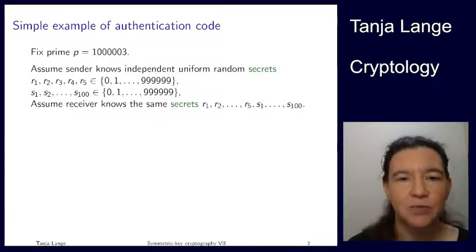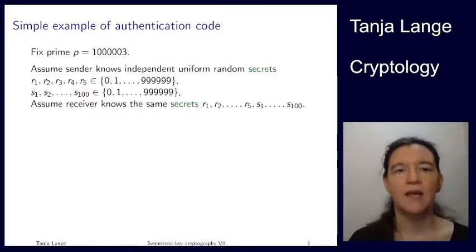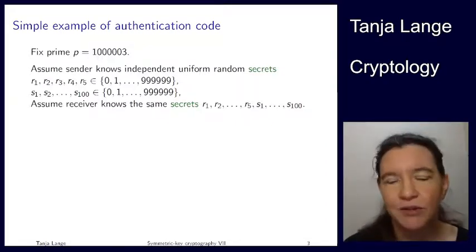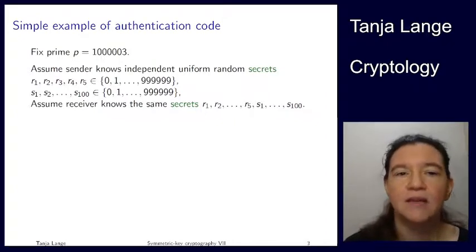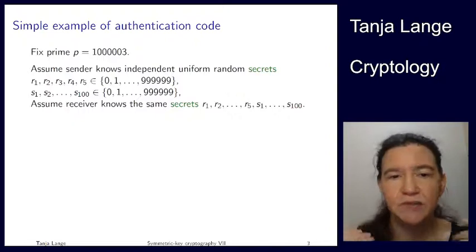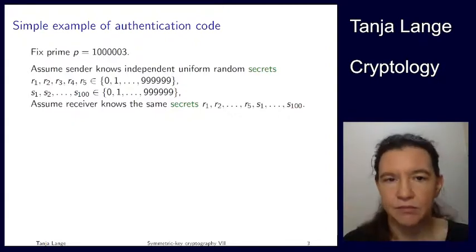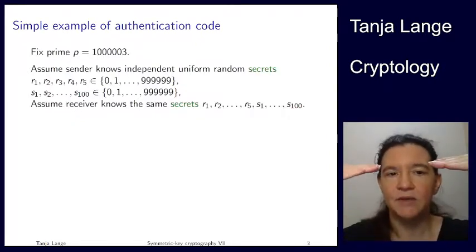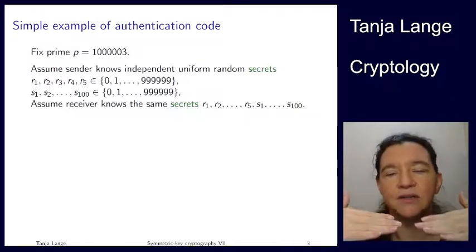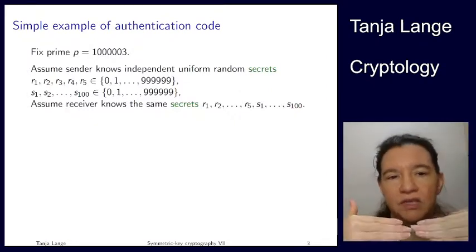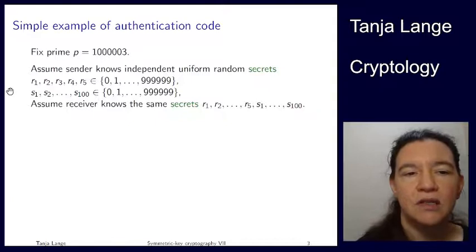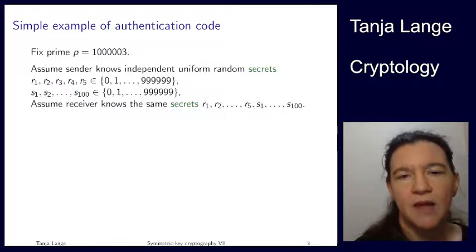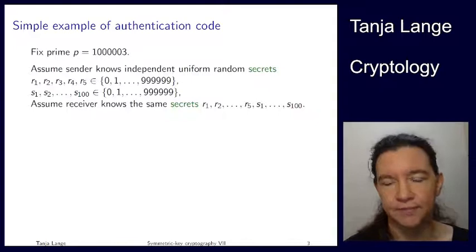Let's see a small example of a message authentication code — this is due to Wegman and Carter. Unlike for block ciphers and stream ciphers, we can actually do proofs about message authentication codes. We fix a prime — I like the prime 1,000,003. We assume the sender and receiver share some secrets: five secrets r1 through r5, each less than a million, and a hundred secrets s_i — one for each message — which are also less than a million.